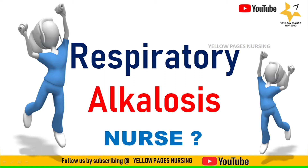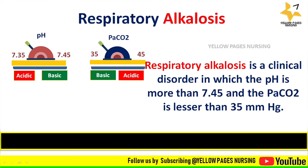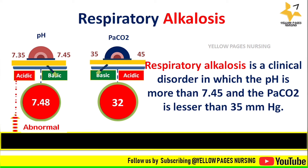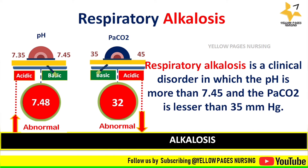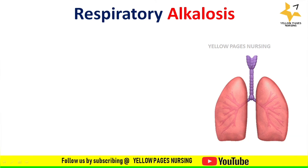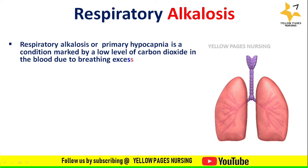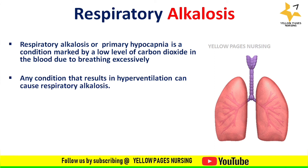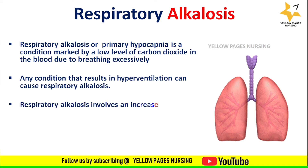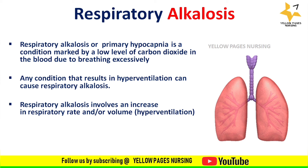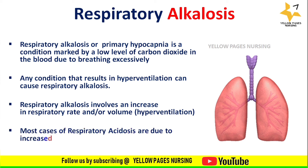What is respiratory alkalosis? It is a clinical disorder in which pH is more than 7.45 and the PaCO2 level is less than 35 mmHg. For example, pH of 7.48 is above normal range and PaCO2 of 32 is below normal range. Respiratory alkalosis, or primary hypocapnia, is a condition marked by a low level of carbon dioxide in the blood due to breathing excessively. Any condition resulting in hyperventilation — an increase in respiratory rate and/or volume — can result in respiratory alkalosis. Most cases are due to increased alveolar ventilation, all of which are the opposite of what happens in respiratory acidosis.